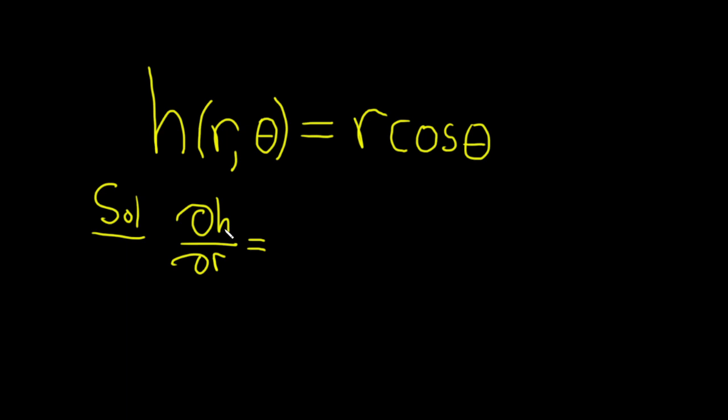When you're computing the partial derivative of h with respect to r, you have to treat all of the other variables as constants. So in this case, theta is being treated as a constant. So the cosine of theta is actually constant. So it kind of just hangs out, it's like a number. So we simply differentiate the r. The derivative of r is 1 times, and we still have this constant, cosine of theta. And so this is equal to 1 times cosine theta, so we simply get cosine theta.